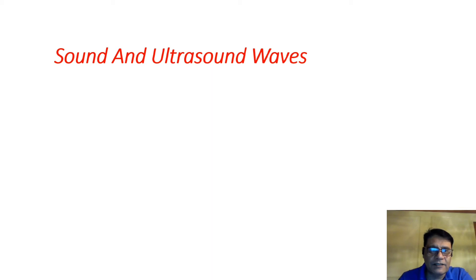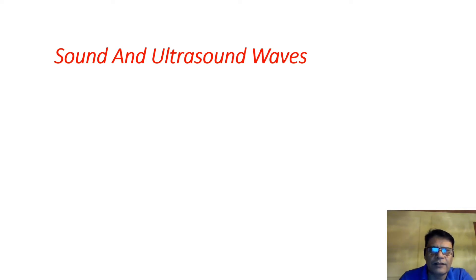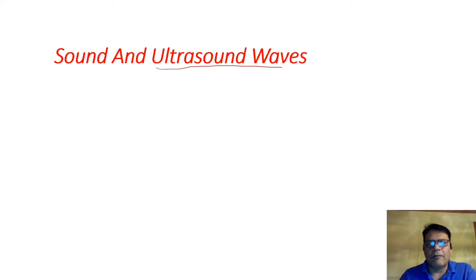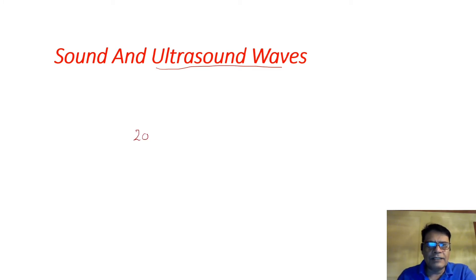Sound and ultrasound waves — by definition and by their characteristics — are like twin sisters. They are very similar to each other in all aspects except frequency. The difference between sound and ultrasound waves is frequency. Ultrasound waves have high frequency, and that high frequency makes them inaudible and invisible. Thanks to ultrasound physics, these inaudible and invisible ultrasound waves become visible through an ultrasound machine.